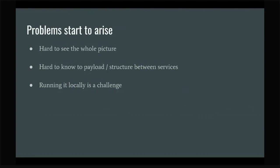The second problem is knowing the payload — what is the structure of data between services? If I want to test something, I need to provide the right payload with the right data. These two things are very much related to API breaking changes. Because the second you lose sight of the whole picture and don't understand the exact payload to send between services, API breaking changes start to become possible — you make a change and you're not 100% sure of the impact.